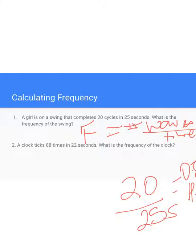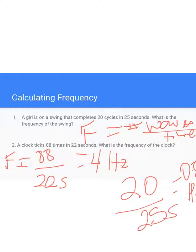In the second one, we have a similar idea. A clock ticks 88 times in 22 seconds. What is the frequency of the clock? The frequency is going to be 88 times divided by 22 seconds, which gives us 4 Hertz. This is all you need to be able to do at grade 8 level for calculating frequency.